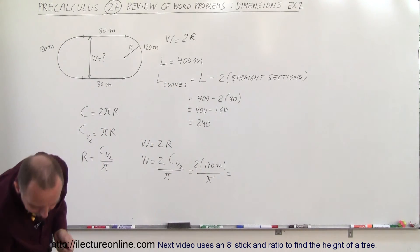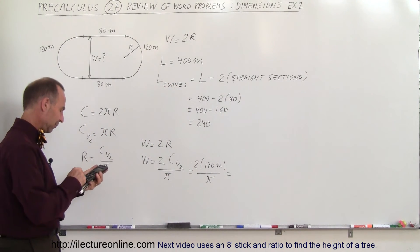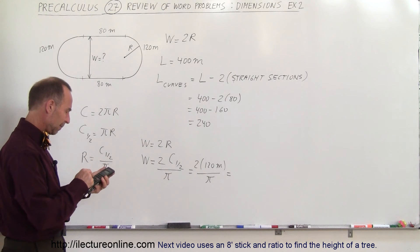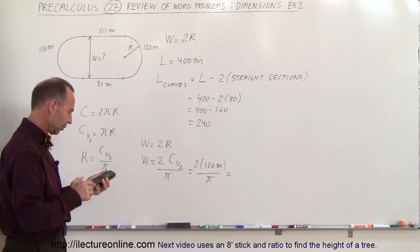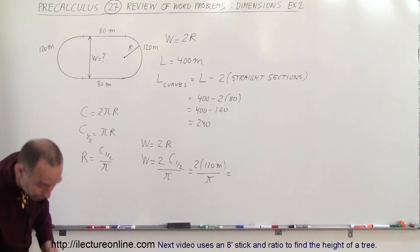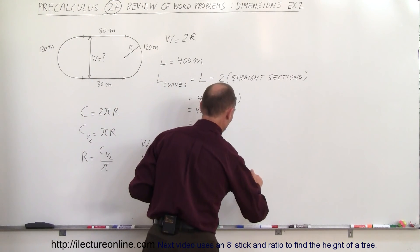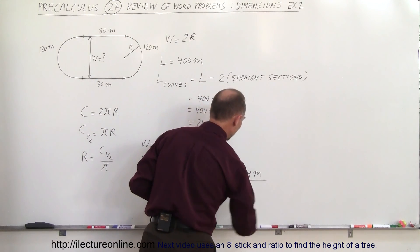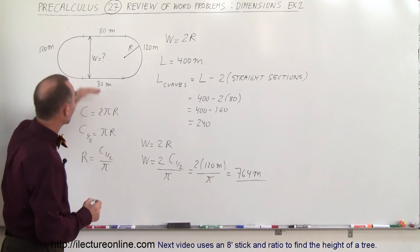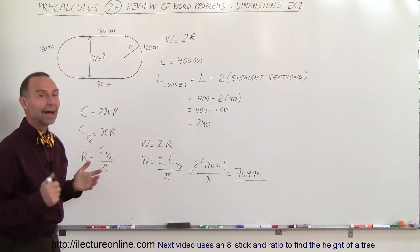Now we need a calculator. 240 divided by π equals 76.4 meters. That would be the distance from one side to the other side of the track on the inside.